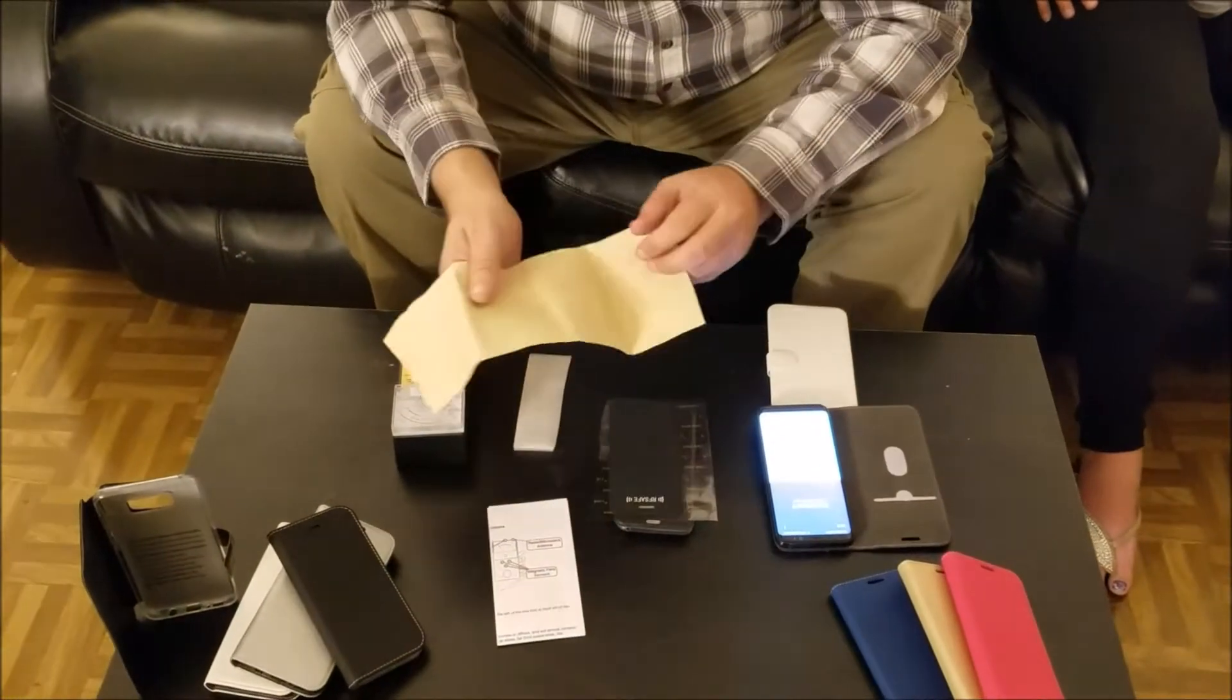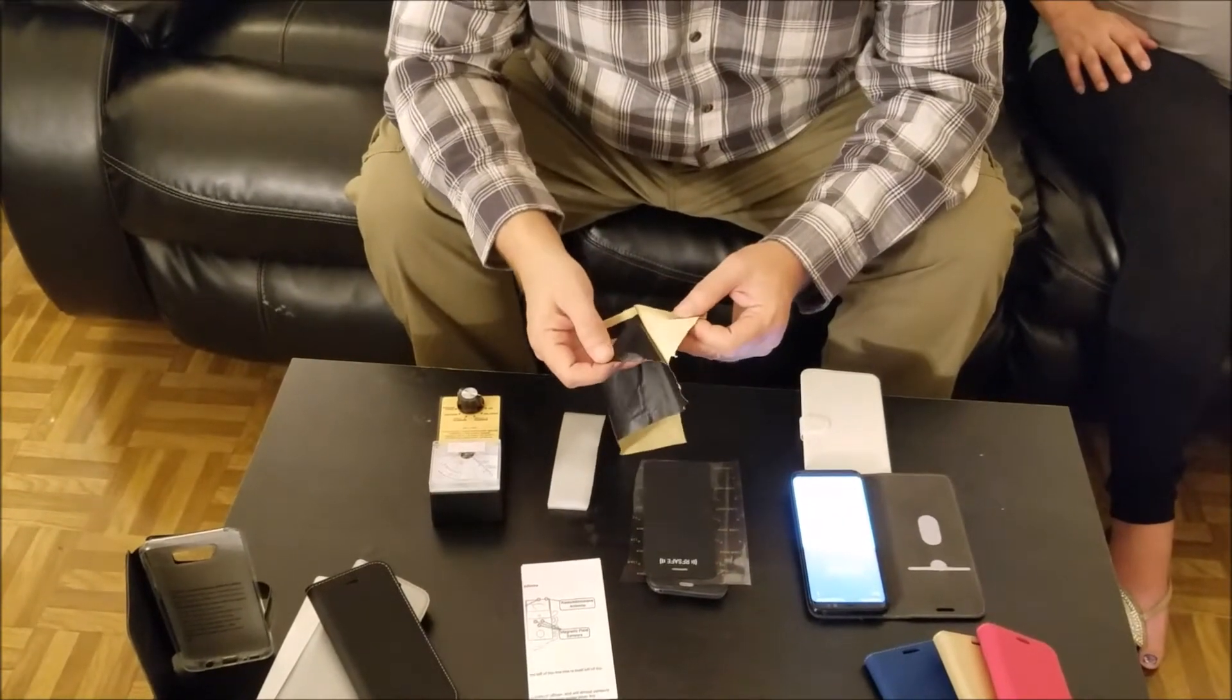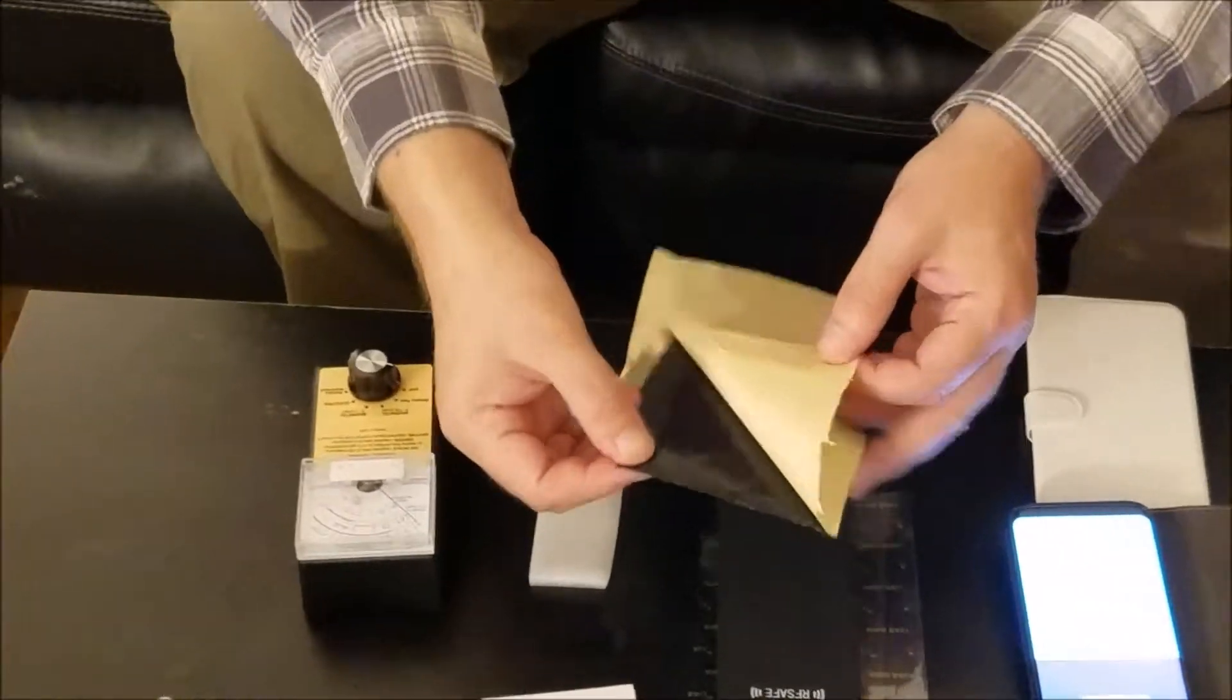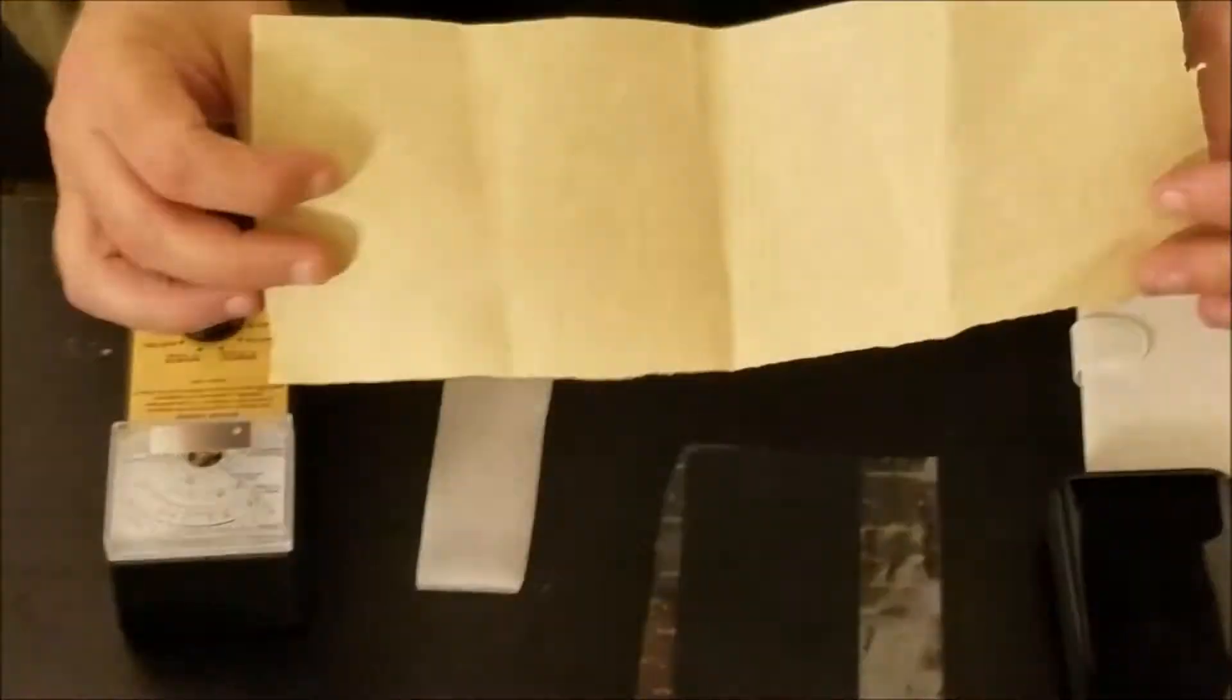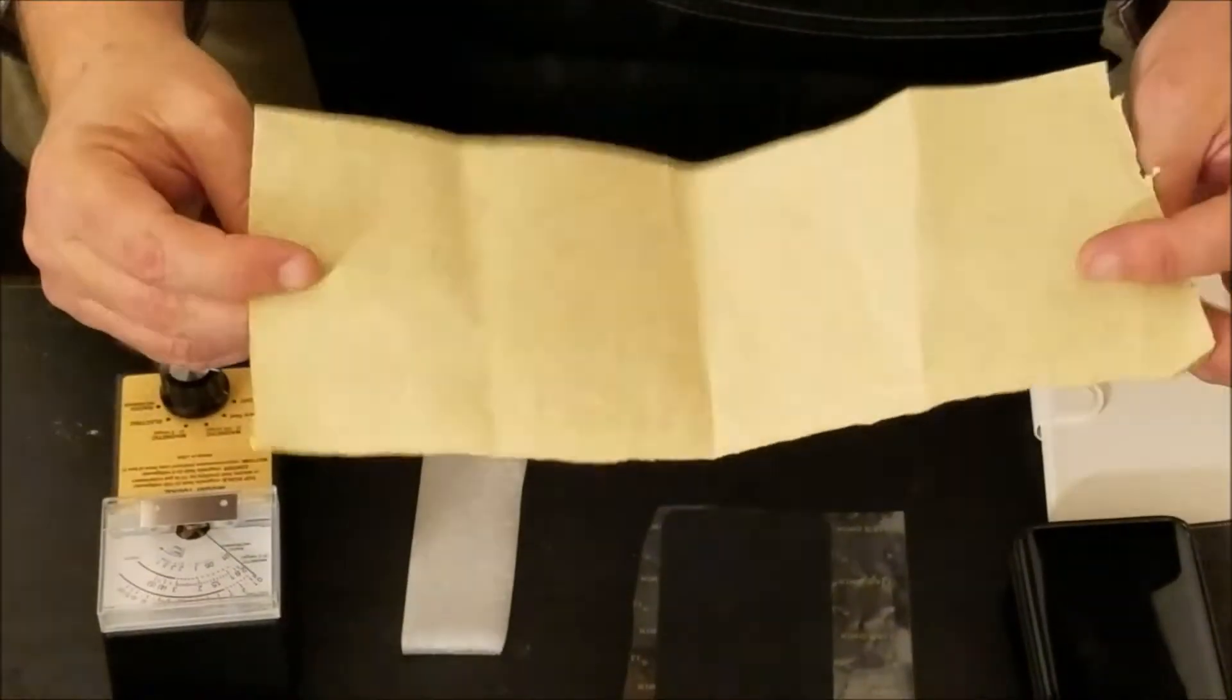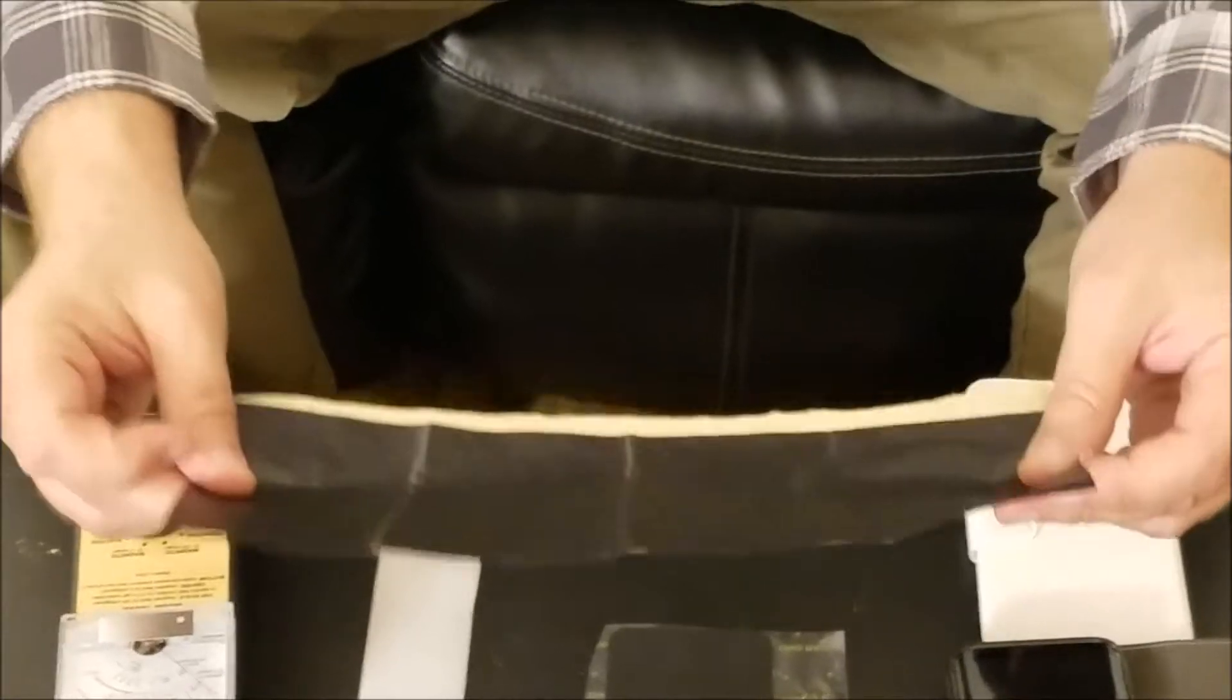So here we have our graphene case. Graphene is a nano material that actually was responsible for winning the Nobel Prize in Physics in 2012. The graphene is this transparent material that's applied to this polyester background right here. It has amazing properties as far as strength, stronger than steel, more conductive than silver as far as heat, more electrically conductive than gold. Electrons move extremely fast here, which gives it some amazing properties.